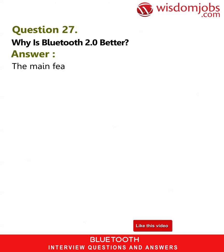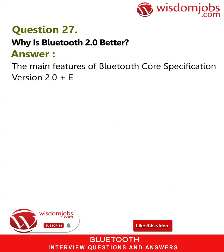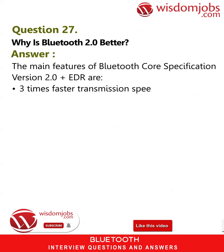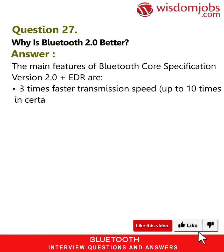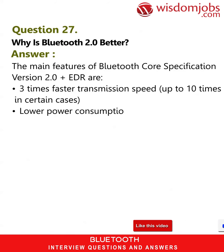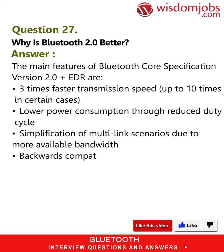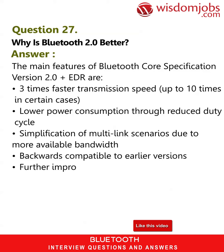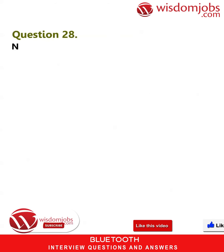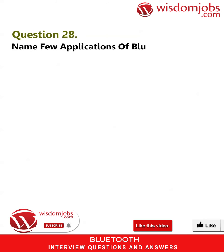Question 27: Why is Bluetooth 2.0 better? Answer: The main features of Bluetooth core specification version 2.0 plus EDR are: three times faster transmission speed (up to 10 times in certain cases), lower power consumption through reduced duty cycle, simplification of multi-link scenarios due to more available bandwidth, backwards compatibility to earlier versions, and further improved bit error rate performance.